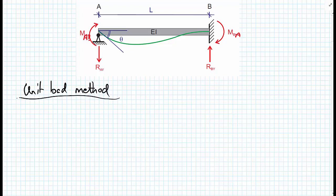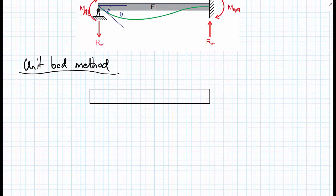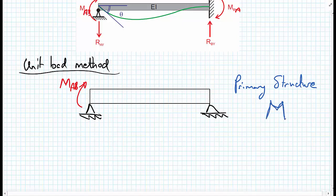To use this method, we need to identify two determinate structures that are equivalent to the indeterminate structure. We can imagine this being split into a simply supported beam — I'll do them both as pinned, since nothing is happening in the horizontal direction. We have a moment MAB applied, and this would become our primary structure. From this primary structure, we can calculate the bending moments with this real load MAB, giving us the bending moment function capital M.